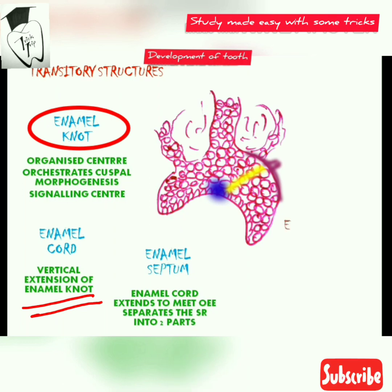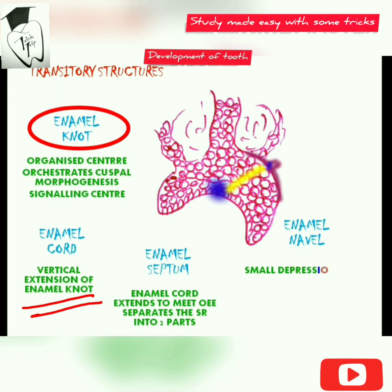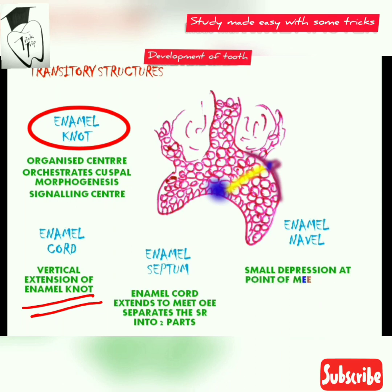When the enamel septum meets the outer enamel epithelium, at the point of meeting the outer enamel epithelium shows a small depression which resembles the umbilicus — that's why it is called the enamel navel. This concludes the cap stage.